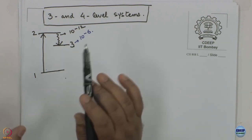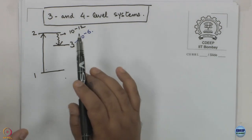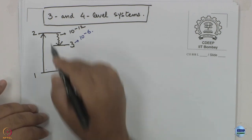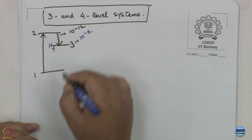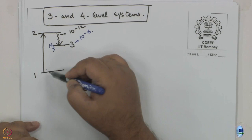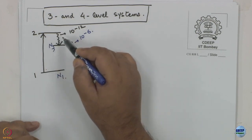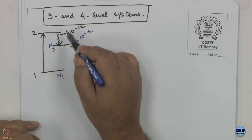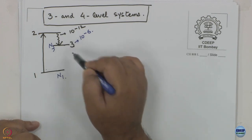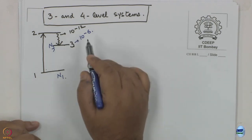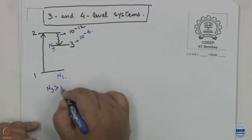For a sufficiently long lifetime of state number 3, N3 population will build up and N1 will keep decreasing. What you are doing essentially is pumping population from state 1 to state 3 through state 2. If the 2-to-3 relaxation is fast enough and state 3 is sufficiently long-lived, you can reach a situation where N3 becomes greater than N1.